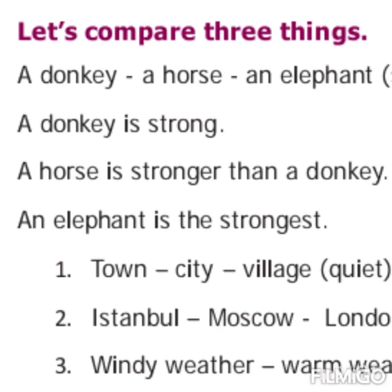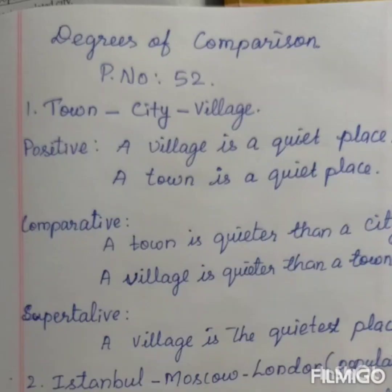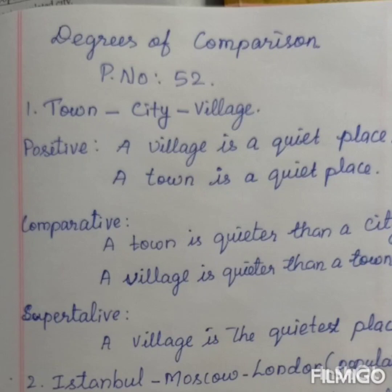Next exercise: town, city, village — adjective is 'quiet'. For positive degree: a village is a quiet place or a town is a quiet place. For comparative degree: a town is quieter than a city, or a village is quieter than a town. For superlative degree, only one sentence: a village is the quietest place. In superlative degree, we compare one thing with all the others.